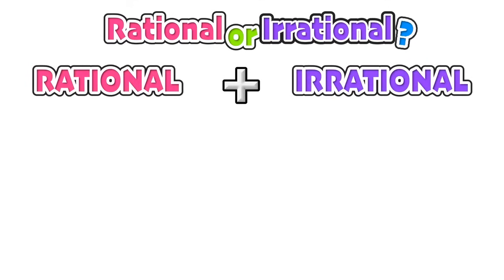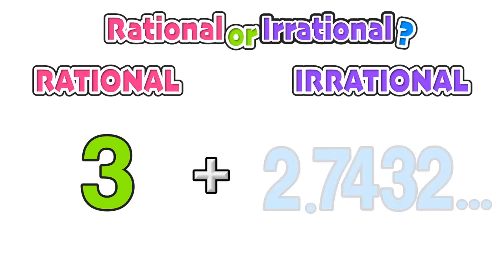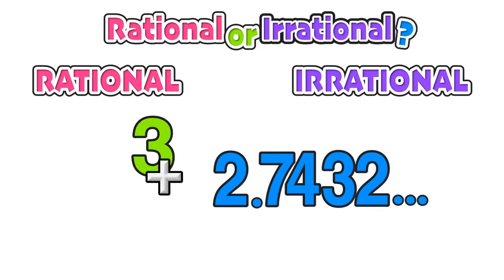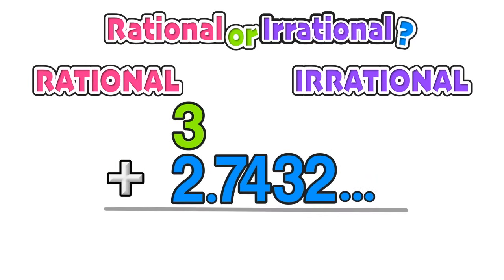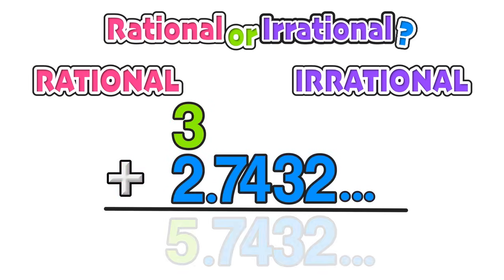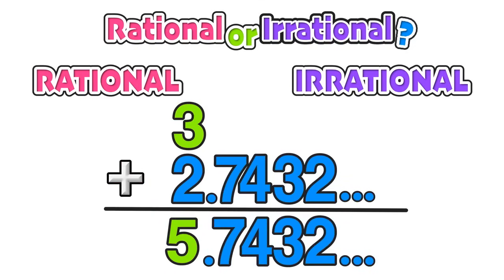Let's verify this with an example. We'll start with the rational number 3 and add to it the irrational number 2.7432..., continuing on and on forever without repeating. Stacking this rational and irrational number and finding the sum, we see we are left with an irrational number since it does not terminate and does not repeat. Therefore, the sum of a rational and irrational number results in an irrational number.